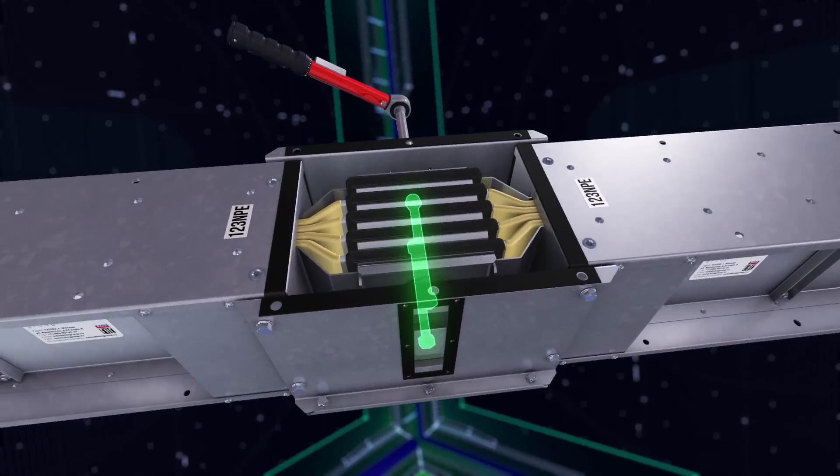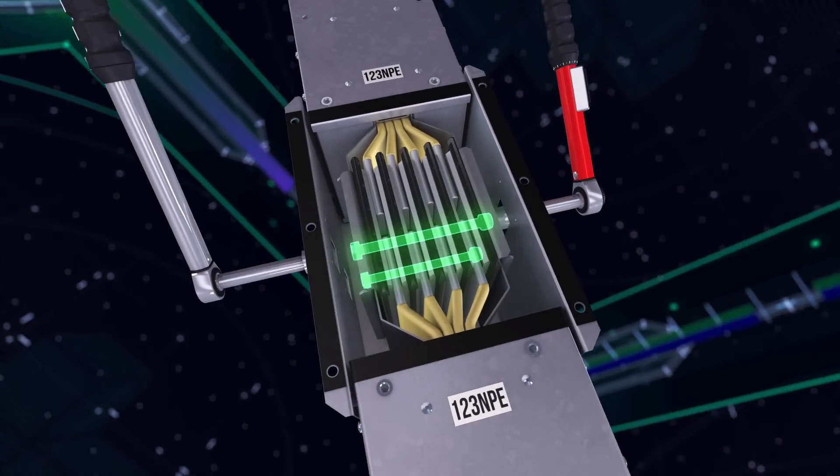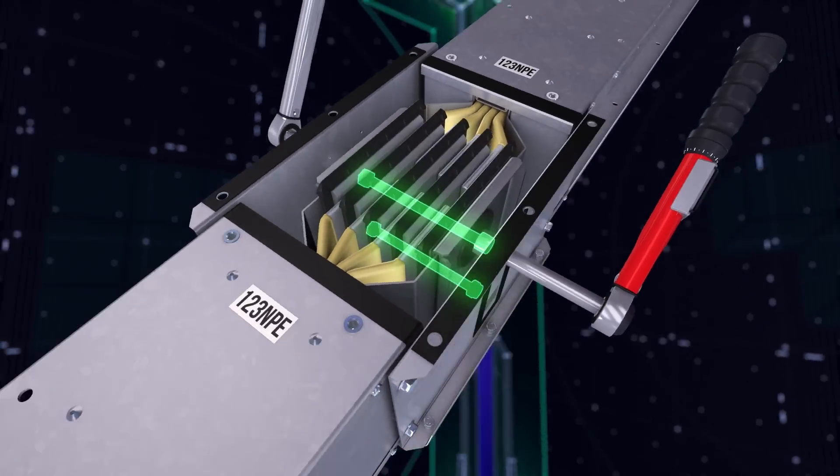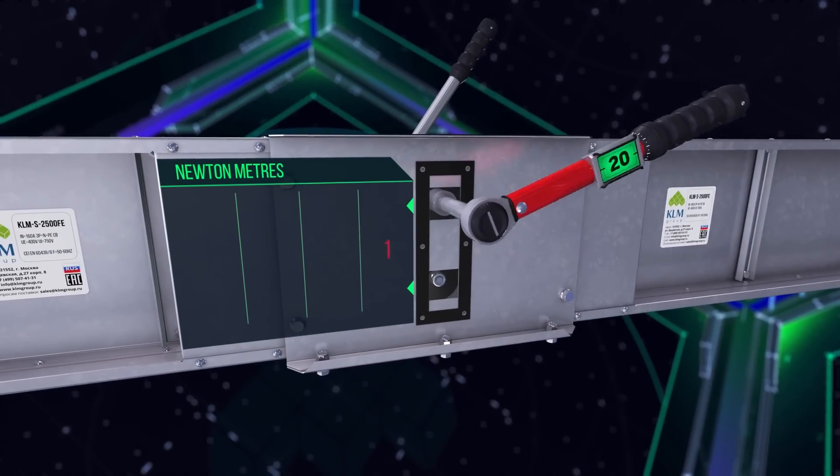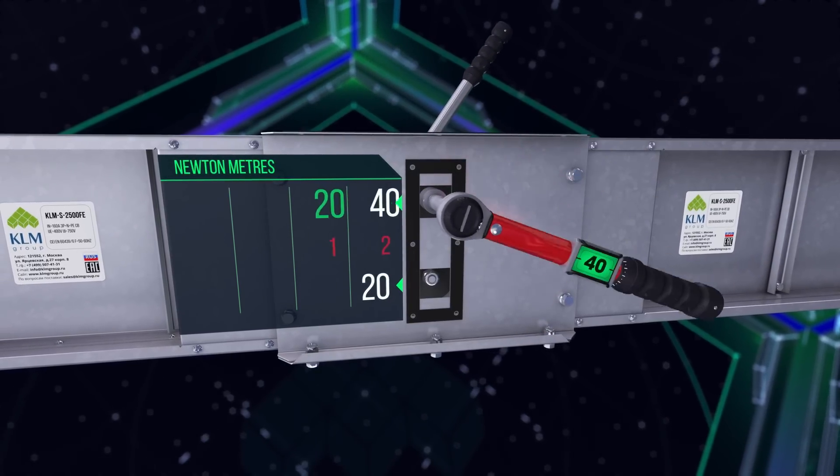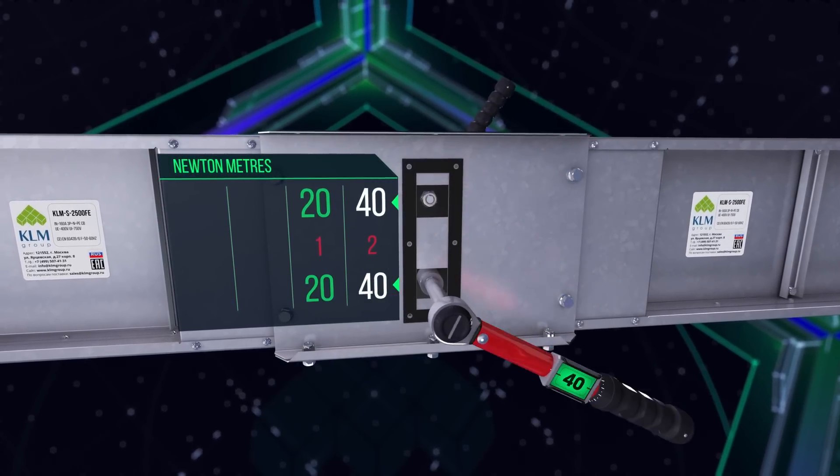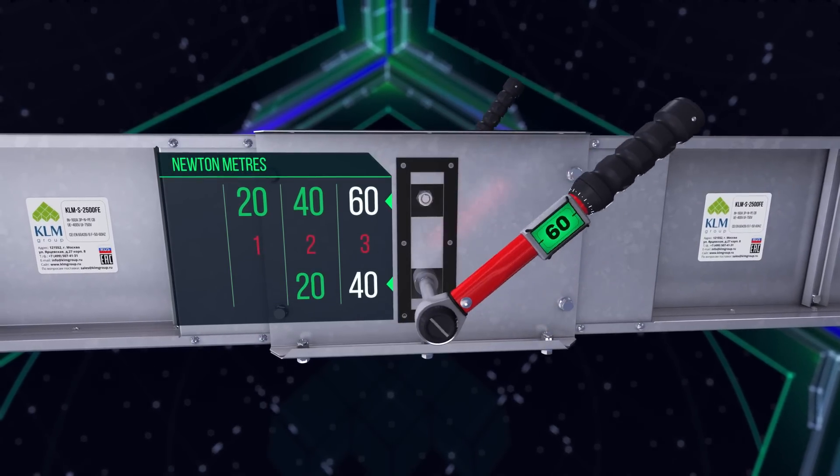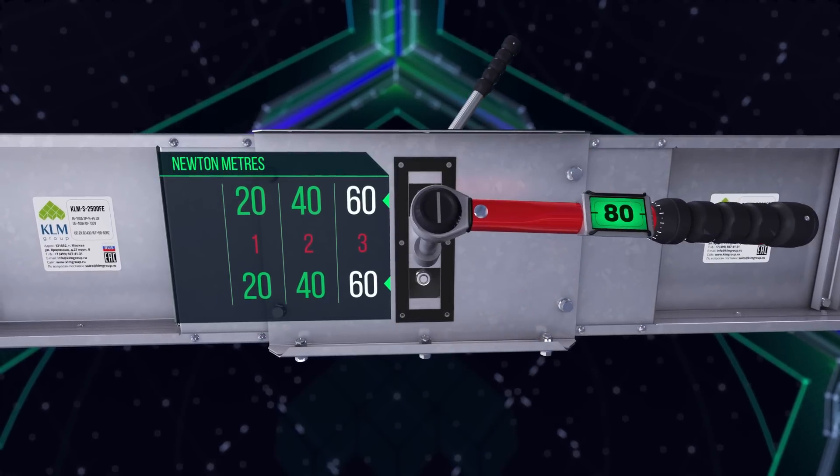Tighten the junction unit clamping bolts in rotating sequence while holding the bolts fast from the other side. This procedure should be performed with a torque spanner in four stages using the following torque settings: In the first stage, the torque spanner should be set to 20 newton meters. In the second, to 40. In the third, to 60. And in the fourth, it should be set to 80 newton meters.